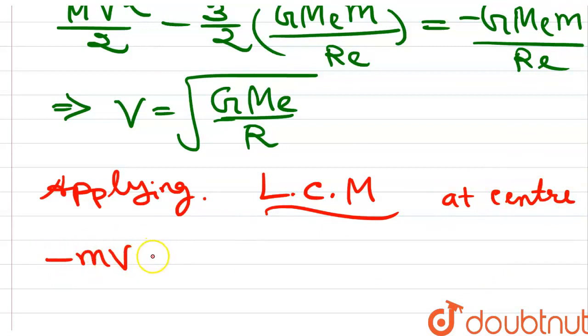m v plus 2m v is equal to m plus 2m. After sticking, the particles have velocity v₁.